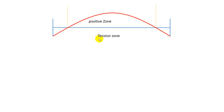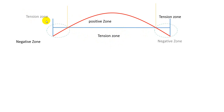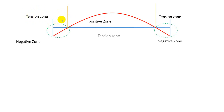From that point to that point, tension will work at the bottom — that is the tension zone. And for another part, from that point to that point, the moment is in the negative zone. That's why from that point to that point, the upside will be the tension zone.